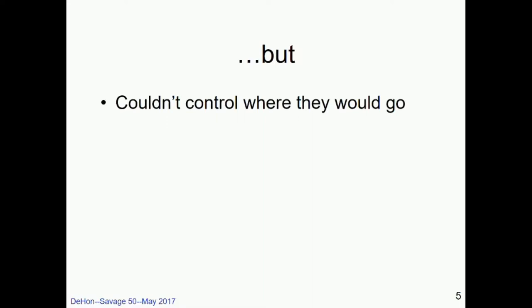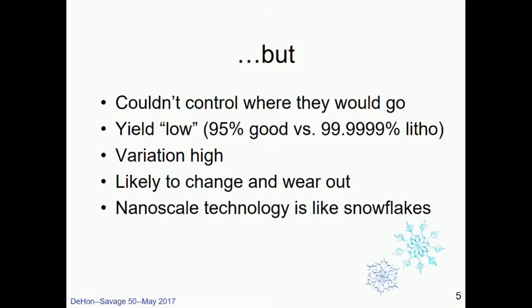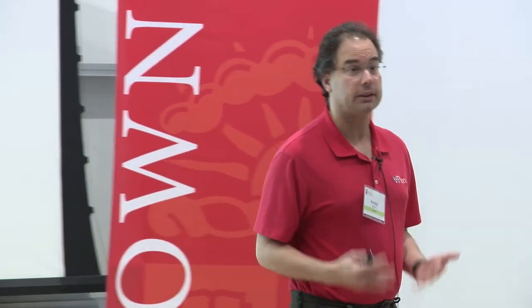So this is all very promising, but there was a challenge to it. As we started looking at it, they could say, well, I can build these wires, but we can't control where they go. And they would say, well, we could get, you know, we as chemists think that yield of 95% is pretty good, which is very different from what I'm used to out of lithography, when we're talking about, well, how many nines do I get on the yield of each of my transistors? The variation was very high for these devices, and things were likely to change and wear out during operation. So I started thinking about nanoscale technology like snowflakes. Each thing that we're going to build is going to be unique, and it's likely to change throughout its lifetime. So this messy nanoscale technology is the thing we're looking at. And one thing I realized, perhaps a little later, is I started realizing that this is going to be true of anything at this scale, including CMOS.